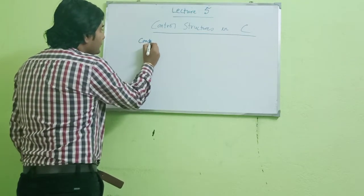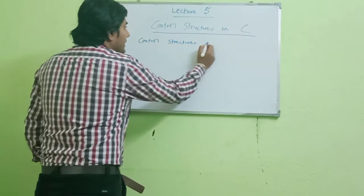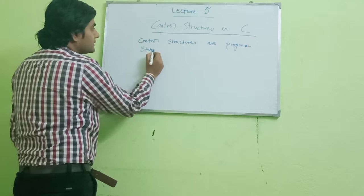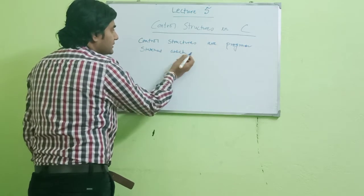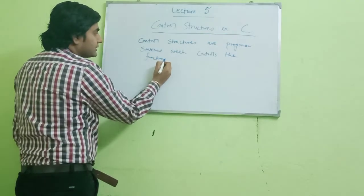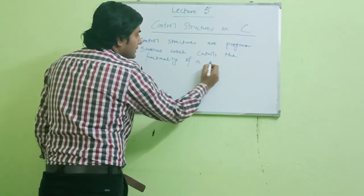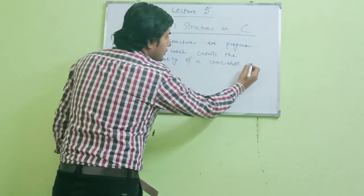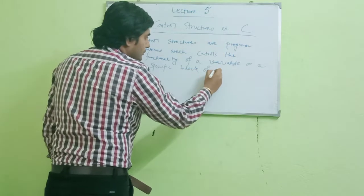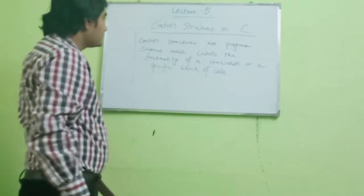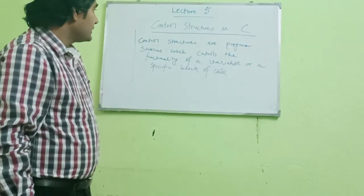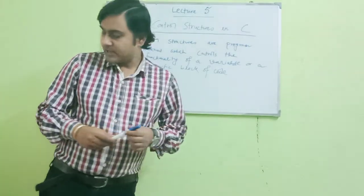Let's start today's lecture on control structures. Control structures are program statements which control the functionality of a variable or a specific block of code. We have different kinds of control structures and I will be explaining them to you step by step.